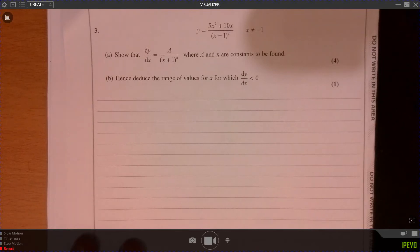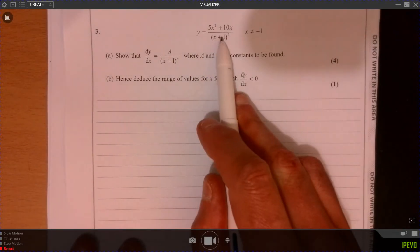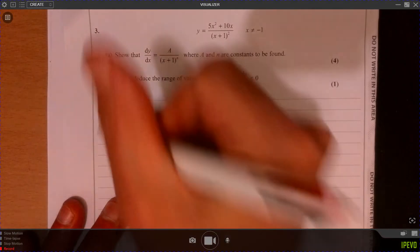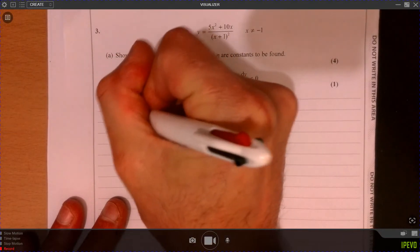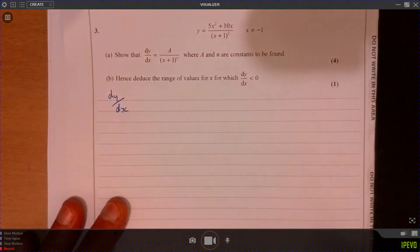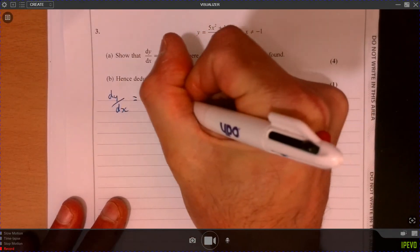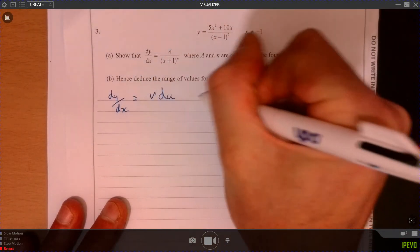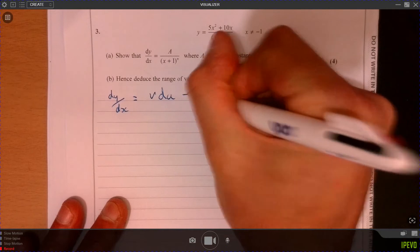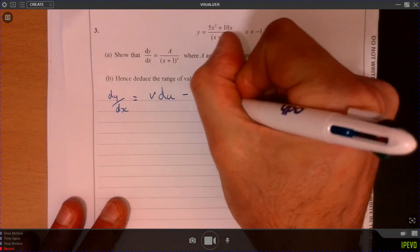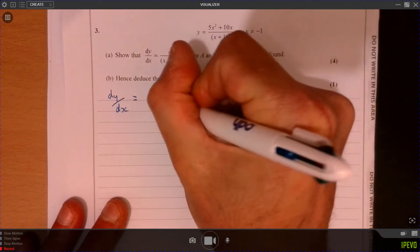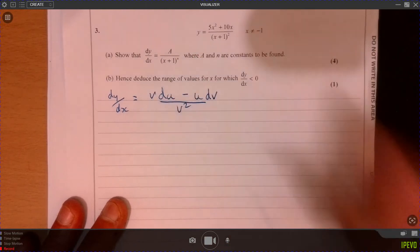Question three. Well, we need to know that we're going to use quotient rule. So that's the first thing that you need to be able to spot. So just jot it down quickly. Again, it's in the formulae book. So V du minus U dv over v squared.